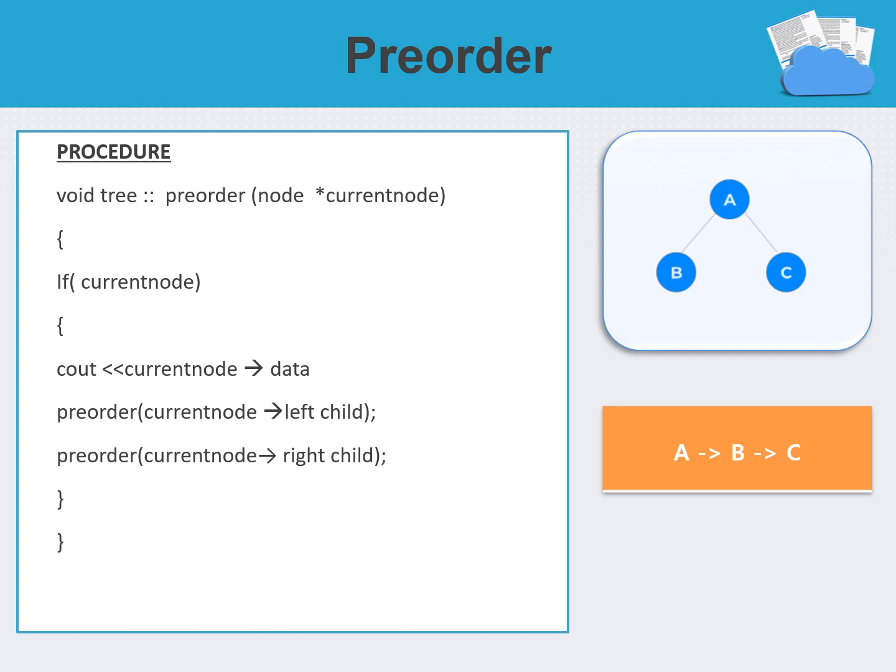In the example, we have three nodes: A, B, and C. A is the root node, B is the left child, and C is the right child. Following the pre-order pattern, we print the root node A first, then the left child B, then the right child C. So the order of visiting will be A, B, C.